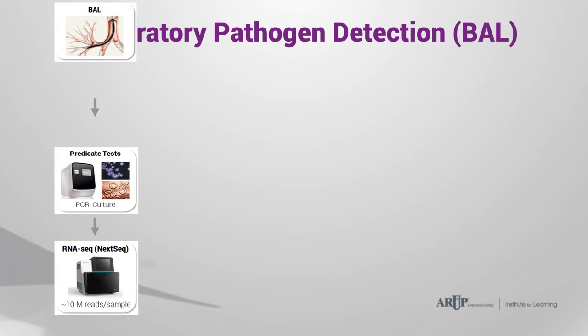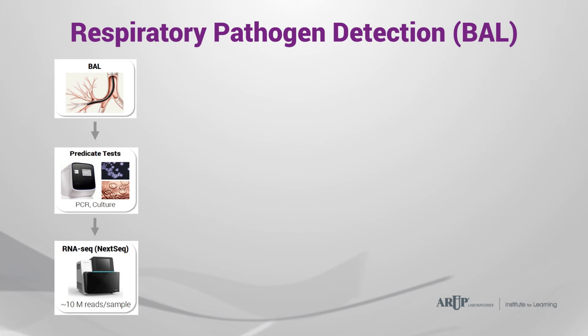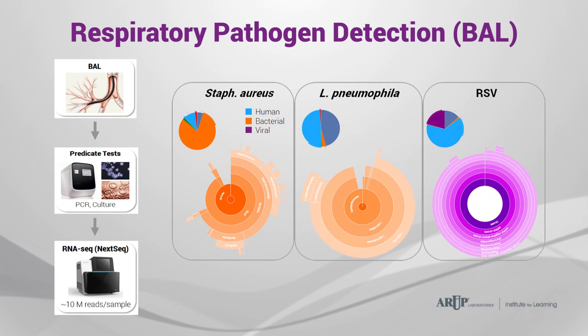To overcome limitations of current tests and make use of the advantages of unbiased pathogen detection, we have validated a metagenomics-based test for lower respiratory tract samples. Results were compared to routine culture, antigen detection tests, direct stains, and PCR. The test analyzes both RNA and DNA from the patient sample. This slide shows three example results of bronchoalveolar lavage samples that tested positive for Staphylococcus aureus, Legionella pneumophila, and respiratory syncytial virus.